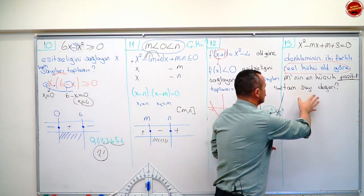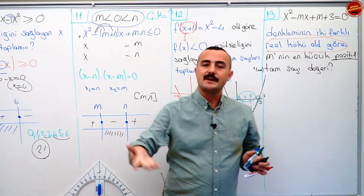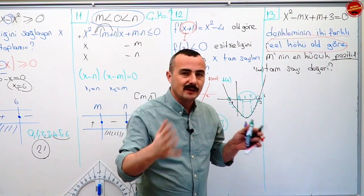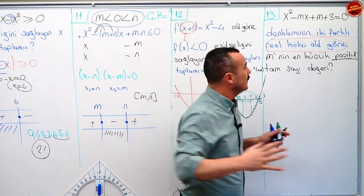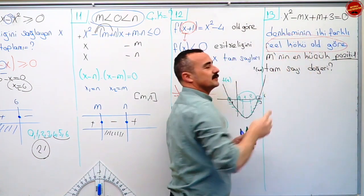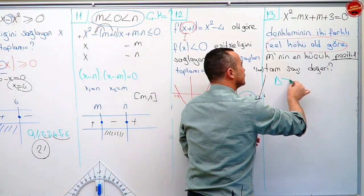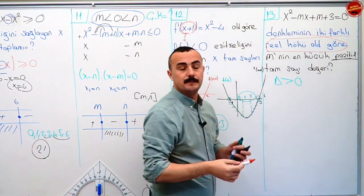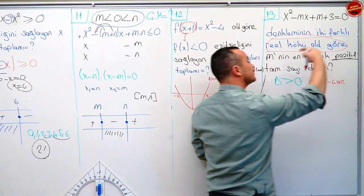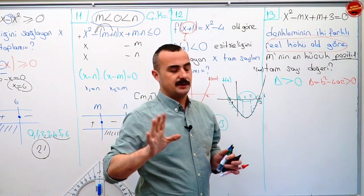Evet şimdi on üçüncü sorumuz. Biz ikinci dereceden denklemlerde kök durumlarını incelerken eşitsizlik çözümleri yaptık ama orada biraz flu kalmıştı. O yüzden buraya böyle bir soru koydum. Diyor ki denklemi vermiş eşittir sıfır, denkleminin iki farklı reel kökü vardır. İki farklı reel kök olma durumu deltanın sıfırdan büyük olma durumuydu. Delta b kare eksi dört a c.